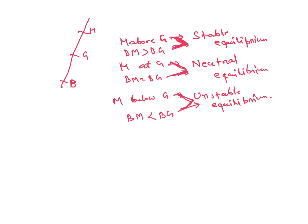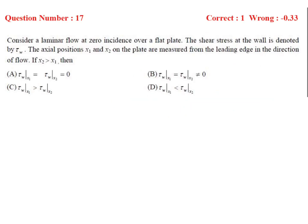Next question: consider a laminar flow at zero incidence over a flat plate. The shear stress at the wall is denoted by τ_w. Axial positions x1 and x2 are measured from the leading edge in the direction of flow. If x2 is greater than x1, we need to find the relationship between the wall shear stresses. The wall shear stress formula is τ_w = C_f × (1/2)ρV². The local skin friction coefficient C_f,x = 0.664 / √(Re_x), and drag coefficient C_D = 1.328 / √Re.